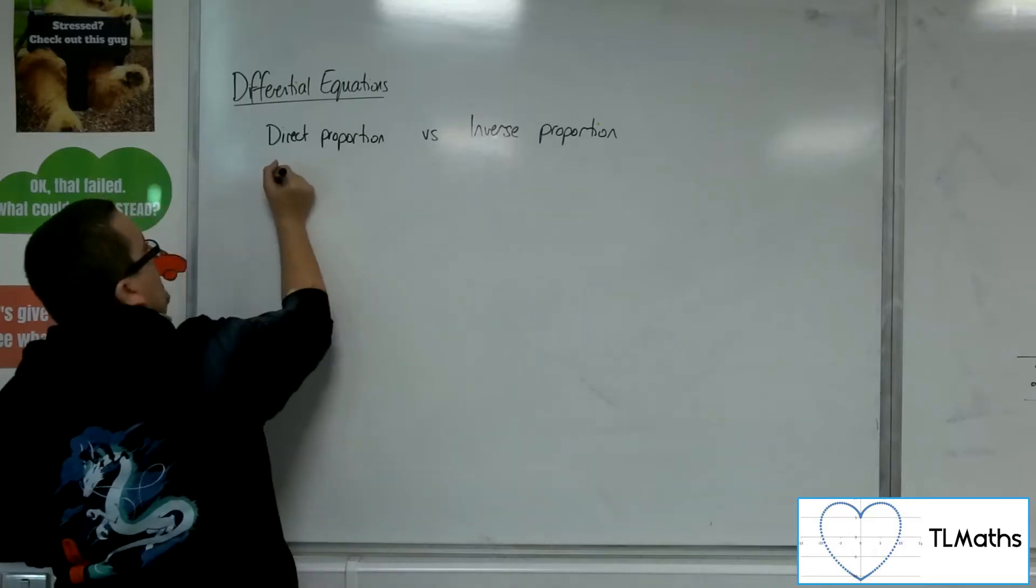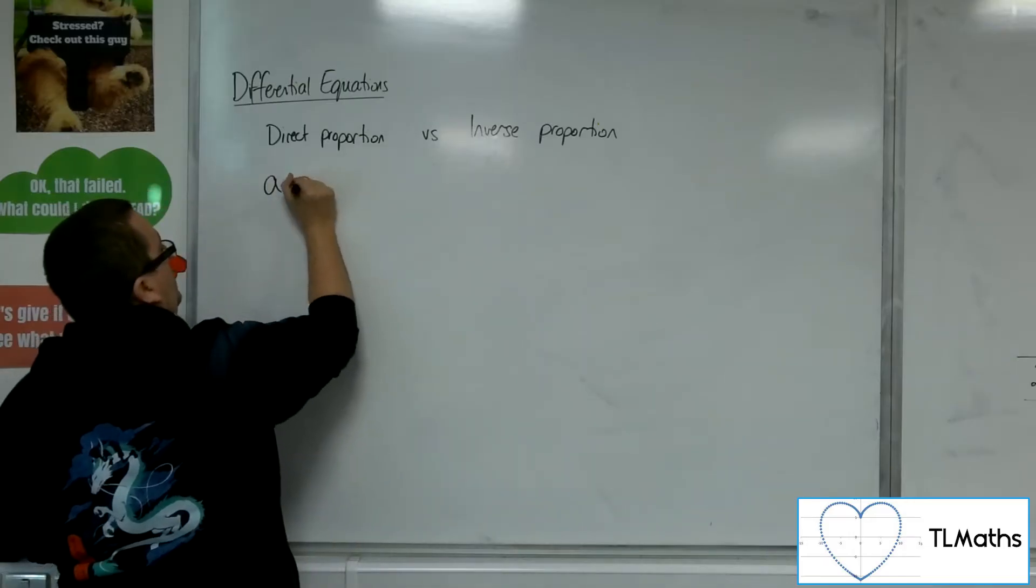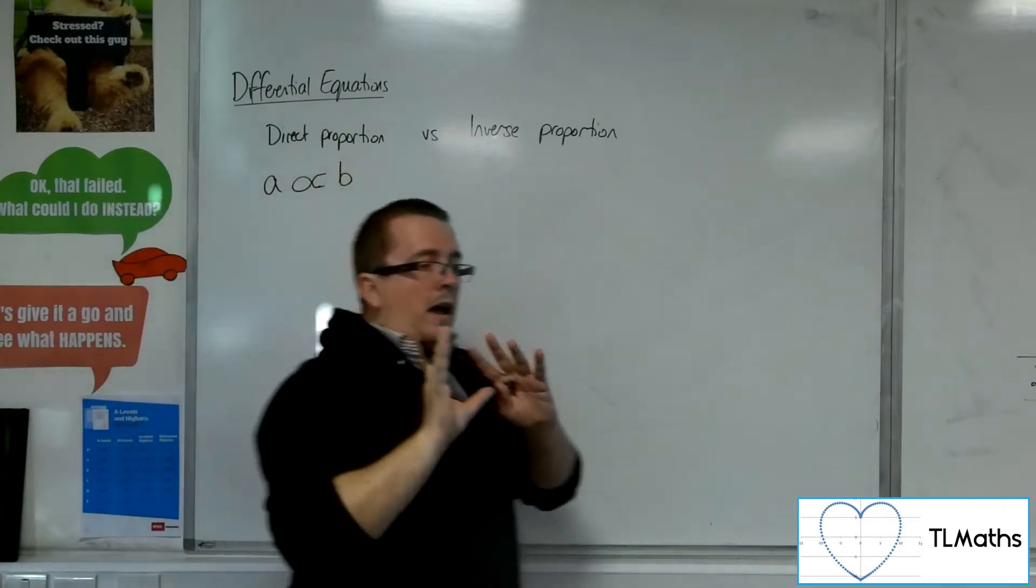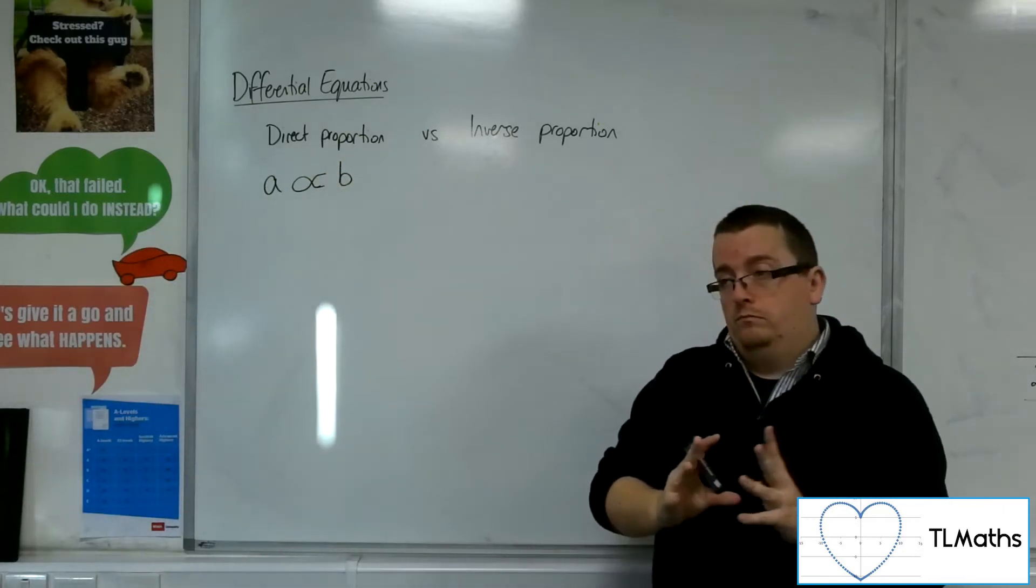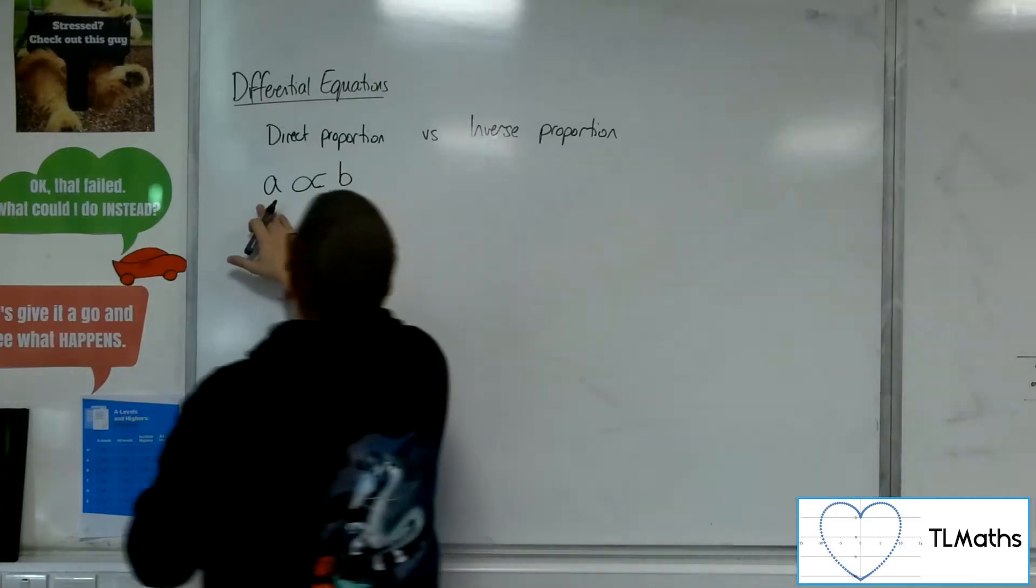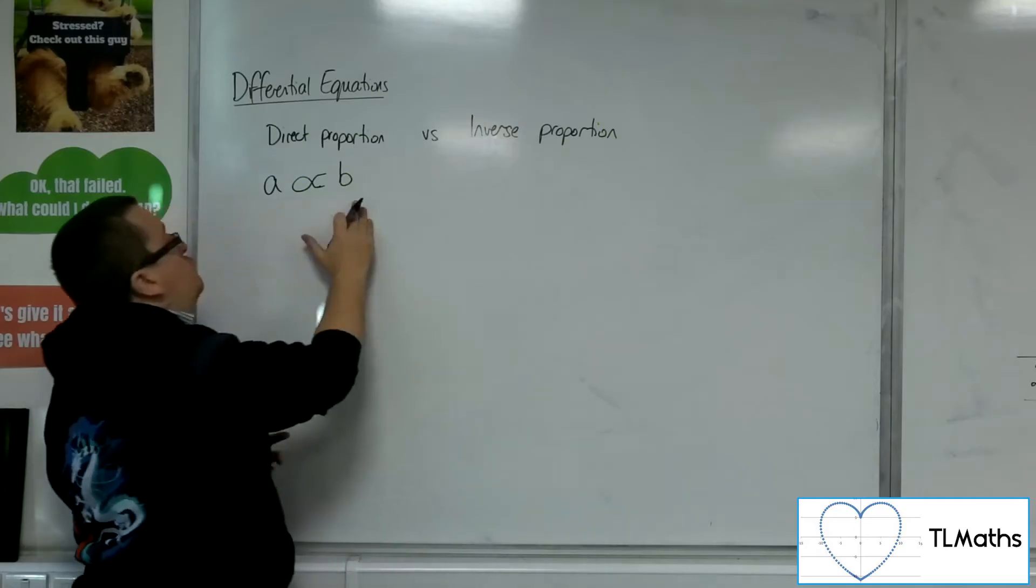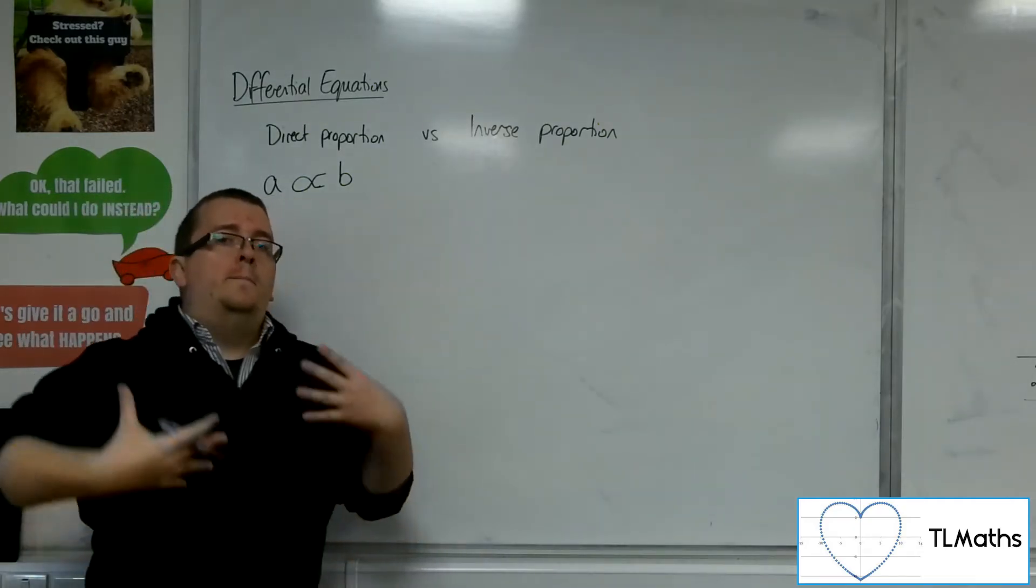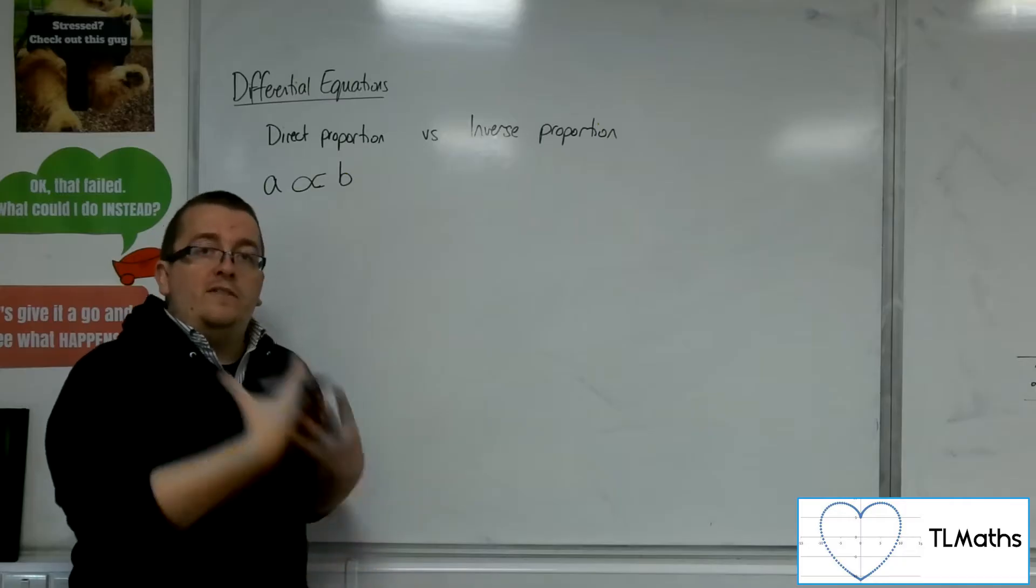If we say that A and B are directly proportional, then we use this symbol here to mean proportional to. Now A is proportional to B. This is direct proportion. So as A gets larger, B gets larger. That's what it means.